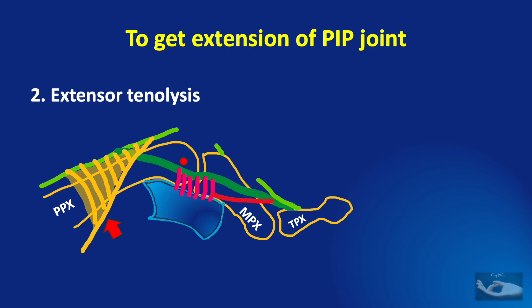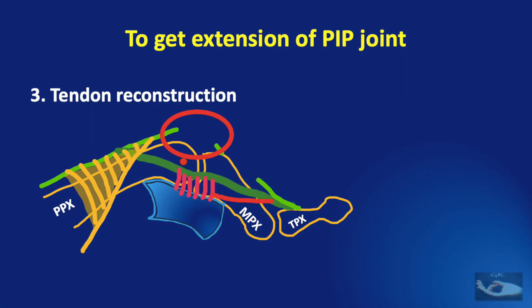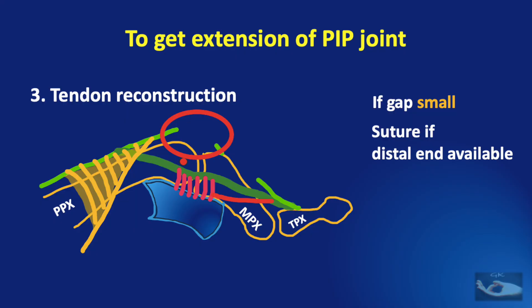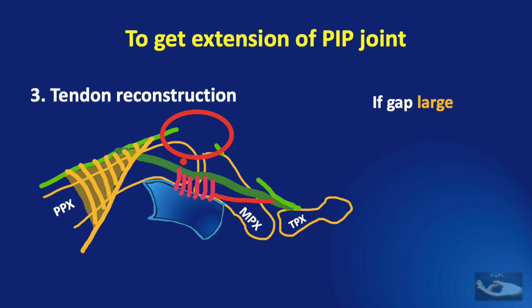Extensor tenolysis refers to the release of the extensor hood from the proximal phalanx bone, so that the extensor tendon becomes completely free. Next, we need to address the disruption of the central slip. If the gap is small, we can suture it if the distal end is available. If the distal end is not available, we can use an anchor suture or pass a transverse drill hole through the base of the middle phalanx and attach the proximal end of the central slip to it. However, if the gap is large, primary suturing will lead to hyperextension deformity at the PIP joint and should be avoided.